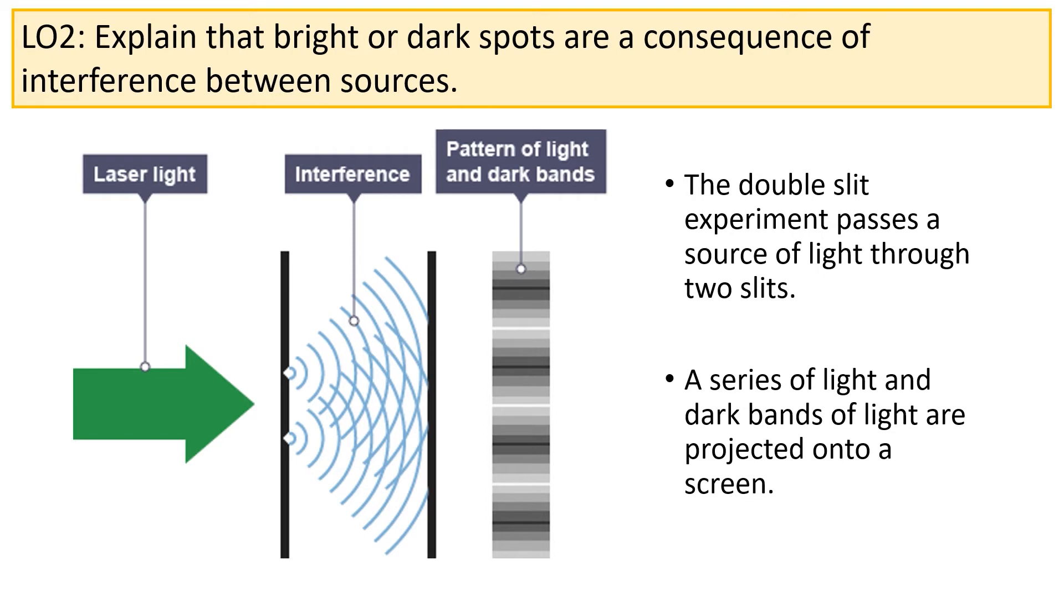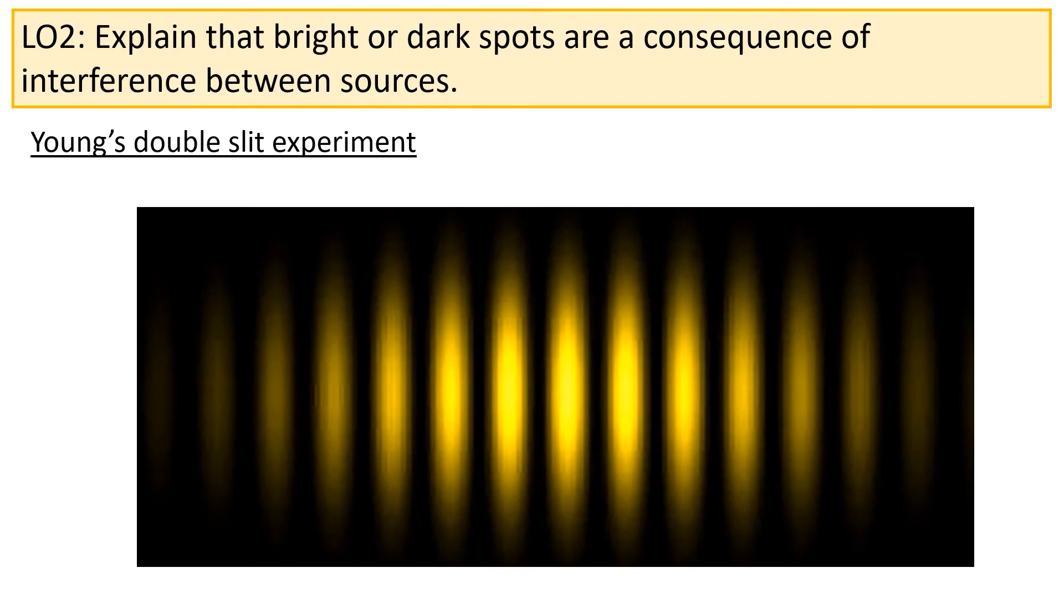On the screen, it was observed that the light formed a series of patterns of light and dark fringes. Here's an example of the interference pattern from a double slit. The bright spots occur because of constructive interference, whereas the dark spots occur because of destructive interference.